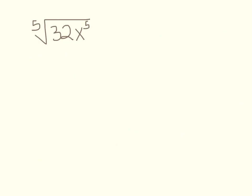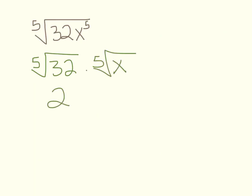Now: the fifth root of 32x to the fifth. The fifth root of 32 can be separated out — that's 2. Then times the fifth root of x to the fifth. Since it's an odd root, no absolute value needed. The answer is just 2x.